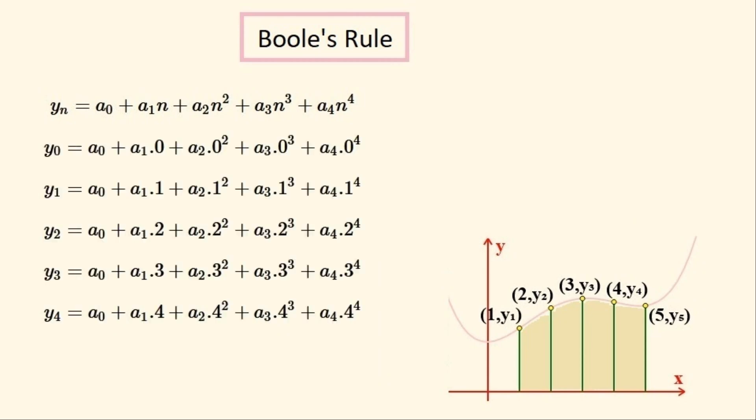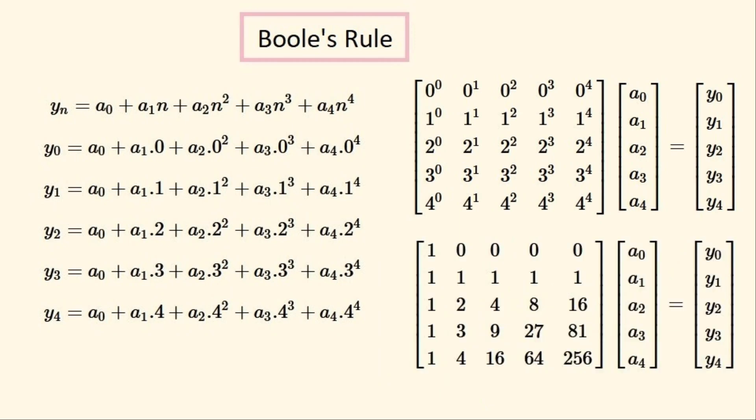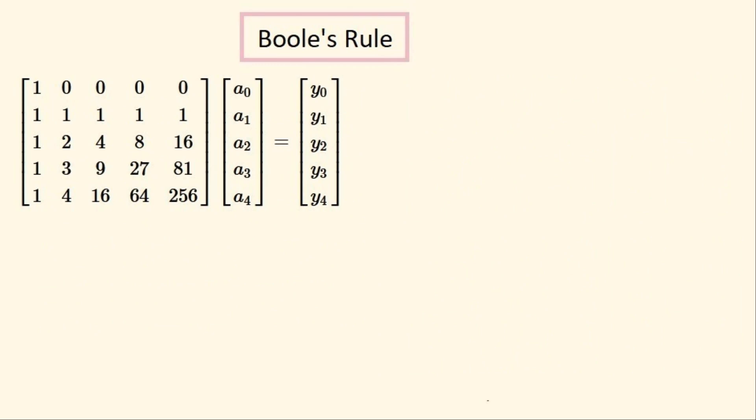So these are all of the values of the function for all of the first five integers, zero to four. We can then pack these equations up into this matrix equation and then we can evaluate all of the entries of this matrix. I'll just write it out again up here.